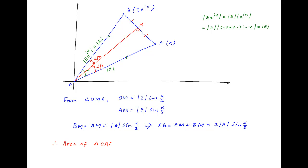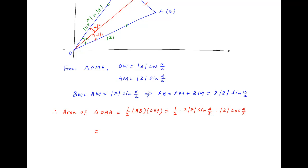Therefore, the area of triangle OAB is equal to half of the base AB times the perpendicular OM. Using the results above, the area equals half of 2 times the absolute value of Z times sin(alpha/2), times the absolute value of Z times cos(alpha/2). This simplifies to half of the square of the absolute value of Z times sin alpha. And this is the required answer.